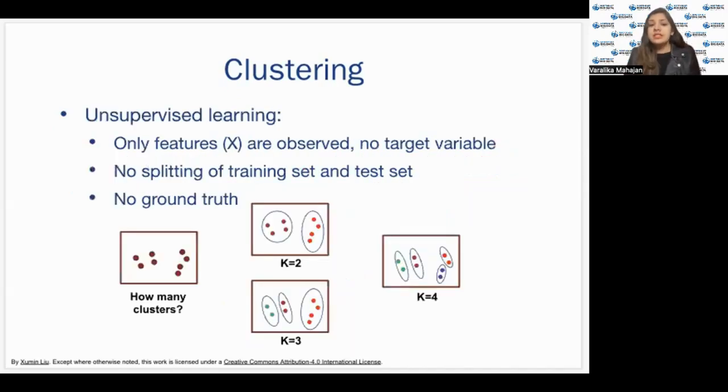Clustering is basically unsupervised learning where we don't know the classification of the objects. So there is no target variable, no Y variable. We just have X objects and we don't know the classification of them into Y. So no need of a training set and no ground truth to guide the learning process. Like for the eight data objects in the figure given over here, there are multiple clustering results we can assume based on different number of clusters.